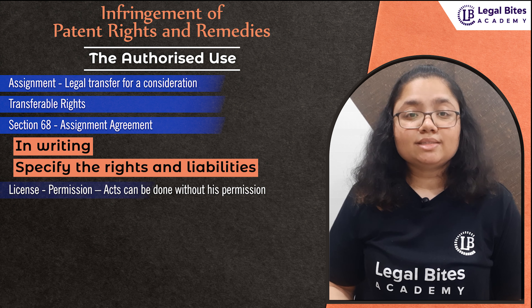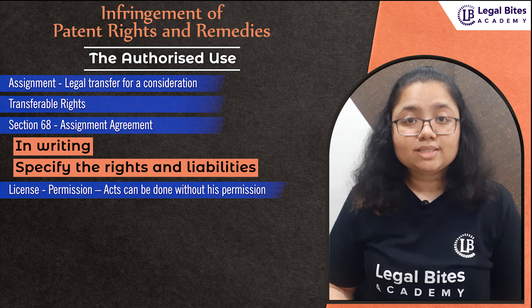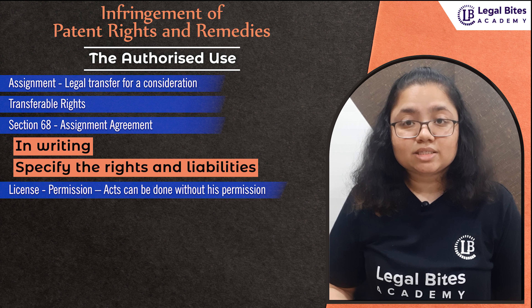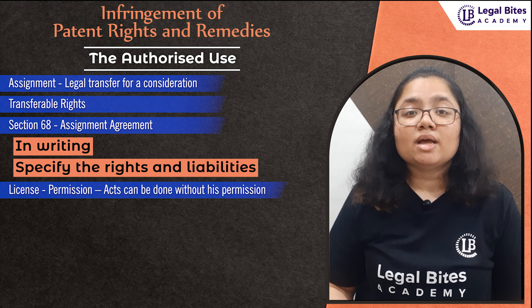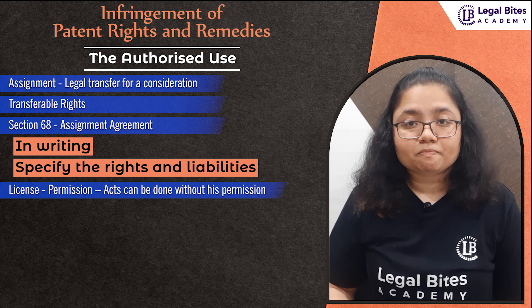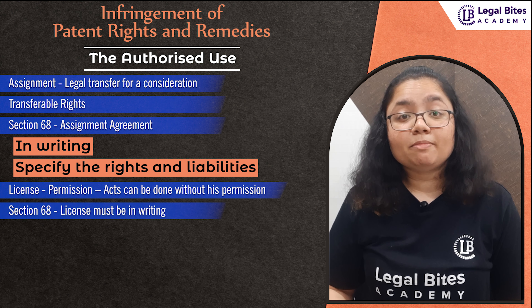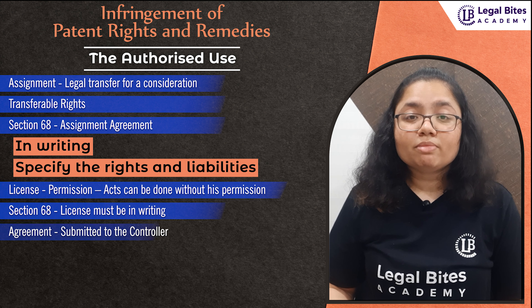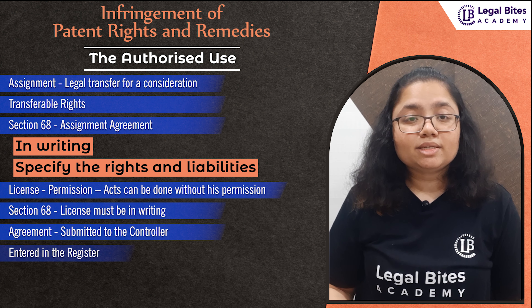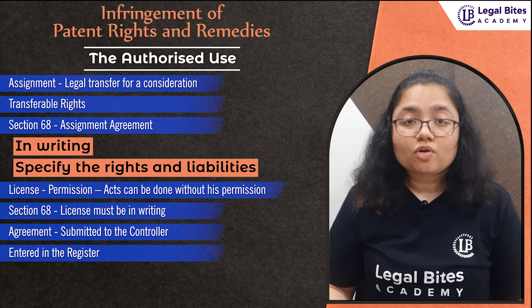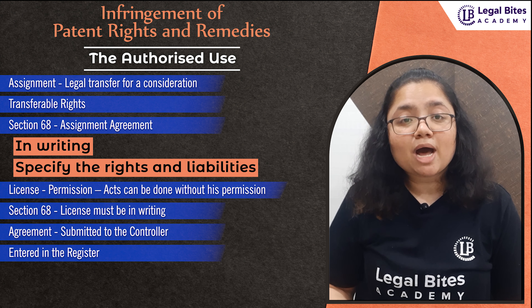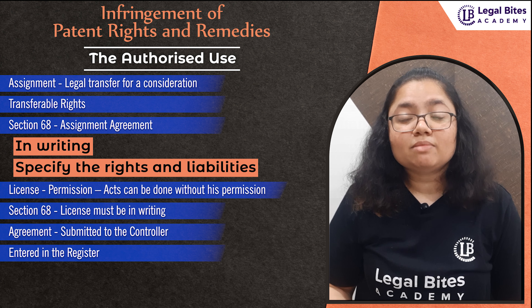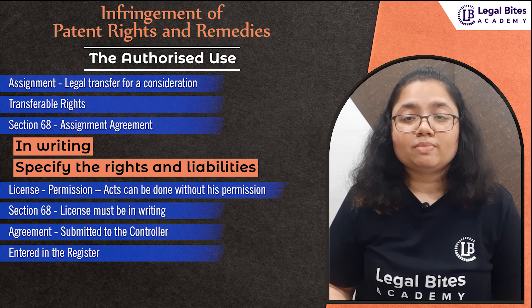The same is the case of licenses. License in basic language means allowing or permitting anyone to do a particular act. This means during the license period, the acts of the patent holder can be done without his permission by the licensee. Section 68 also provides that the license must be in writing. After putting it in writing, the same document must be submitted to the controller for entering the licensee's name in the register. If the proof of rightful title is given, the controller is bound to enter the name as the title proprietor or co-proprietor, and if any interest is created by any instrument, such particulars are also to be entered in the register.